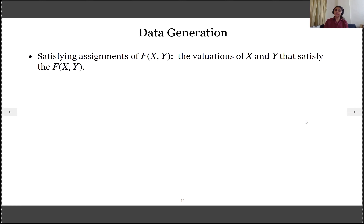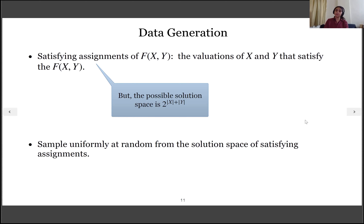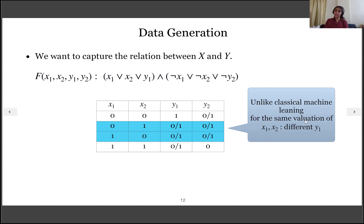The first component is data generation. We can consider the satisfying assignments of f as our data. But the possible satisfying assignments can be exponential in terms of the cardinality of x and y. So we can sample uniformly at random from the solution space to generate the data. But the question is whether sampling uniformly at random is good enough to learn a function from relational data. For a fixed valuation of x1 and x2, we can have different valuations of output variables y1 and y2. That is exactly where it differs from classical machine learning, where a fixed valuation of the feature set should yield exactly one label value.